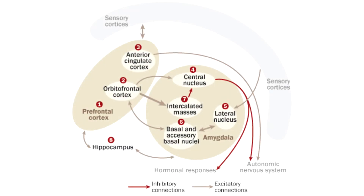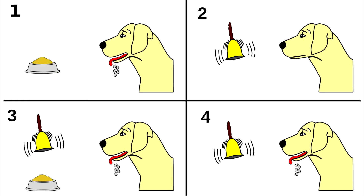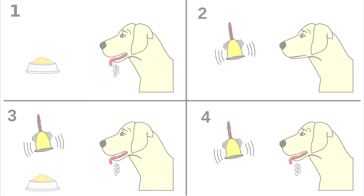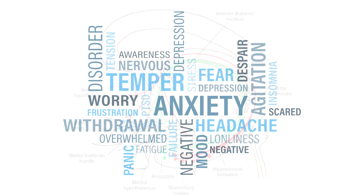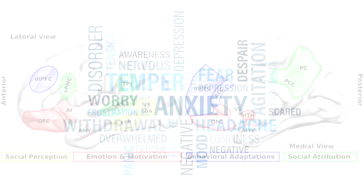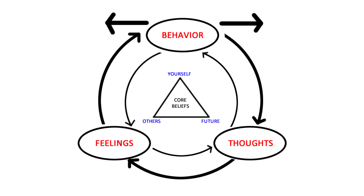The hippocampus participates in storing the information together with the emotional coloring attached — or in other words, the senses are stored together with the sensation. The bed nucleus of the stria terminalis may cause long-term emotional response, whereas the cortex is often crucial for turning off the emotional response.